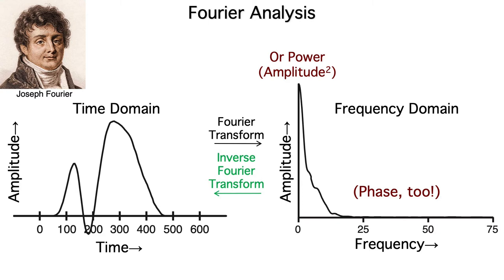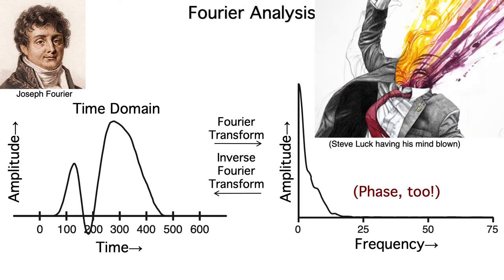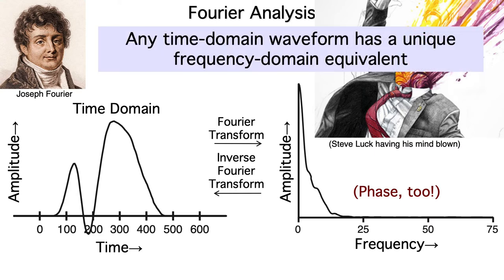There's also an inverse Fourier transform. That just sums together the sinusoids shown in the frequency domain plot to recreate the original ERP waveform. I think this is pretty amazing. For any time domain waveform, no matter how complex, we can use the Fourier transform to come up with a set of sinusoids that could be summed together to recreate the original waveform. And there's a unique solution. There's one and only one set of sinusoids that can perfectly recreate the original waveform.